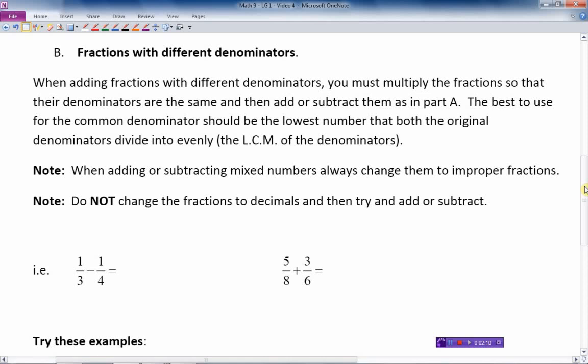The best to use for the common denominator should be the lowest number that both the original denominators divide into evenly. In other words, the lowest common multiple of the two denominators, or in the case of three fractions could be three denominators.